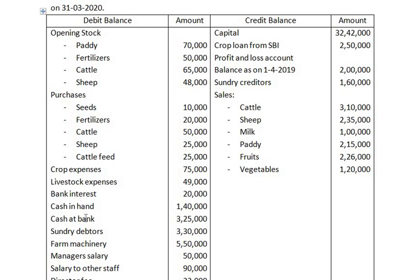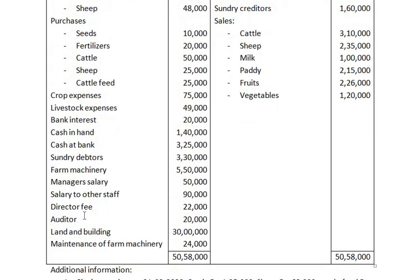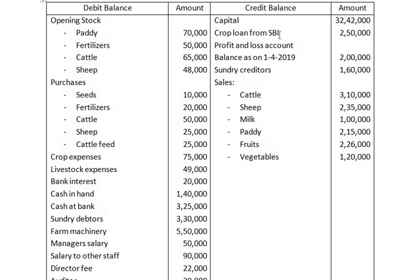Cash in hand is an asset. Cash at bank is an asset. Sundry debtors is an asset. Farm machinery is an asset and has to be recorded on the asset side of the balance sheet. Manager salary and salary to other staff have an adjustment. Director fees and auditor's fees have to be debited to the profit and loss account. Land and building has to be recorded on the asset side of the balance sheet. Maintenance of farm machinery has to be debited to the crop account.